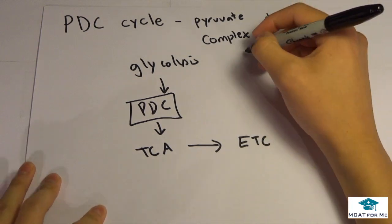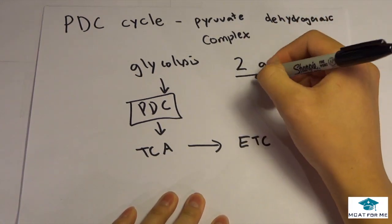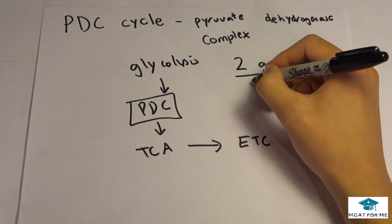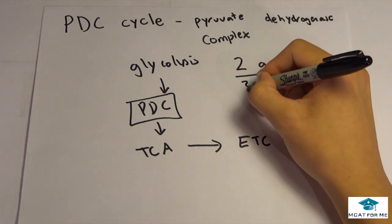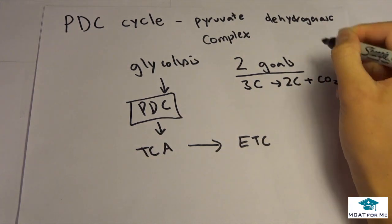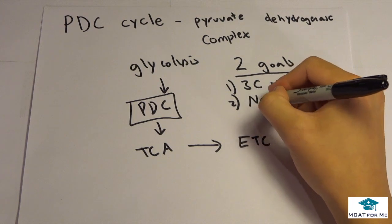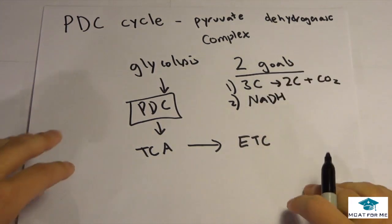So we're going to look at the PDC today. What is the PDC? There are two goals for the PDC which is to break down pyruvate, which is a three carbon molecule, into two carbons and then a CO2. That's goal number one. And goal number two is to produce NADH.